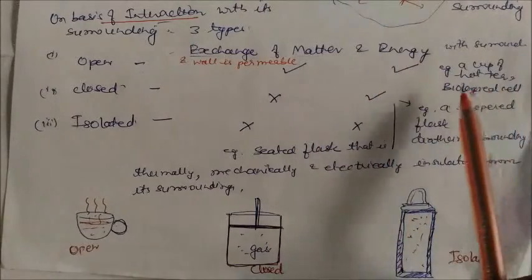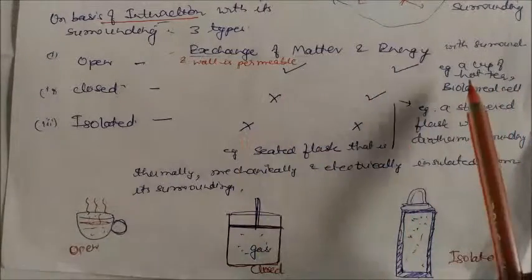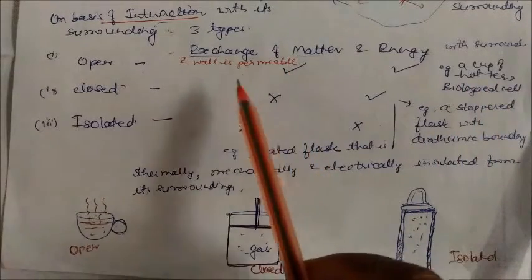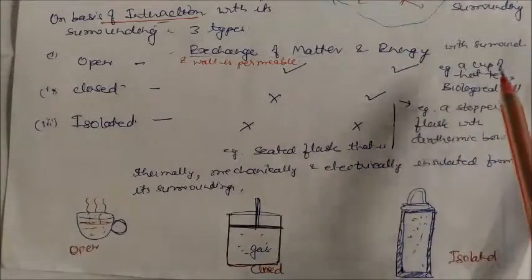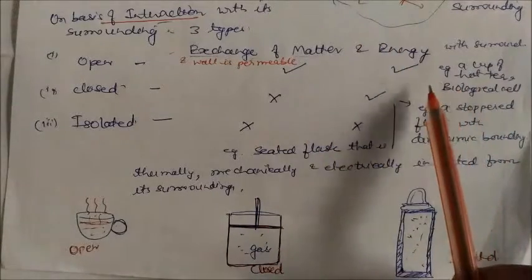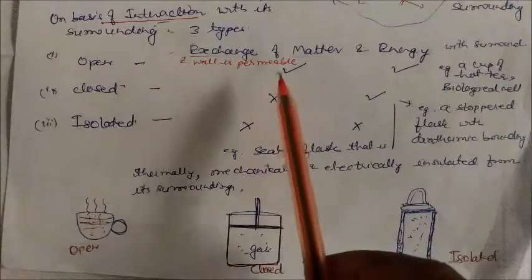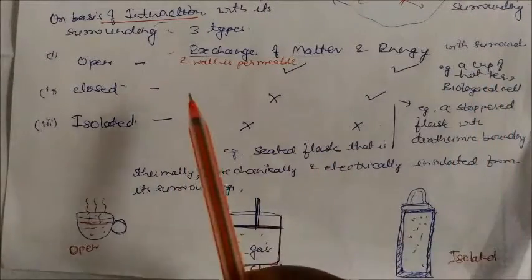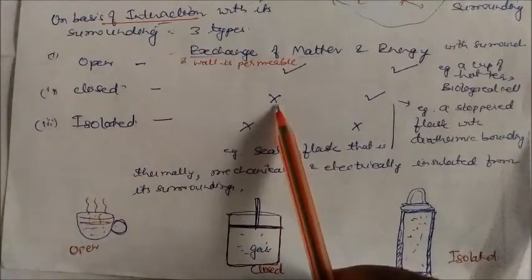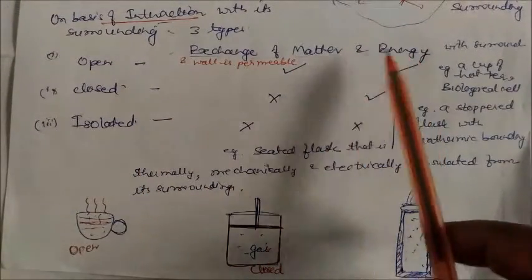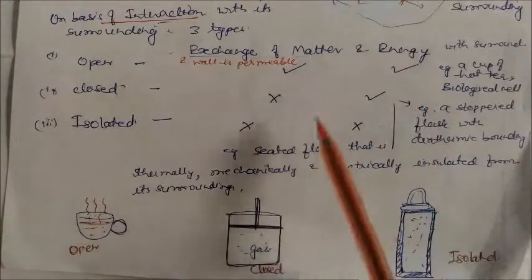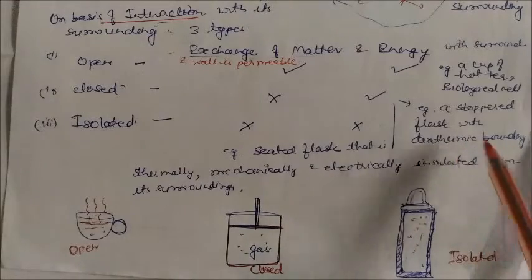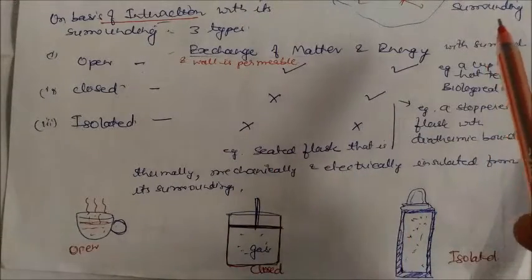A biological cell is also an open system, because its wall is permeable — nutrients and waste materials pass through its wall. In a closed system, matter is not transferred, only energy is transferred. An example is a stoppered flask with a diathermic wall — a boundary through which energy can be transferred but not matter.